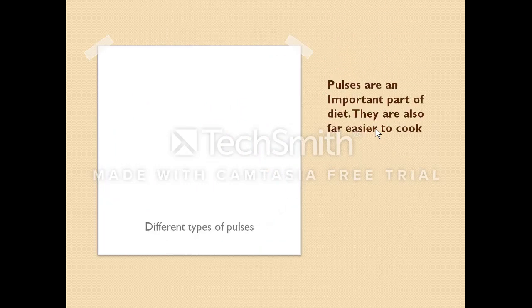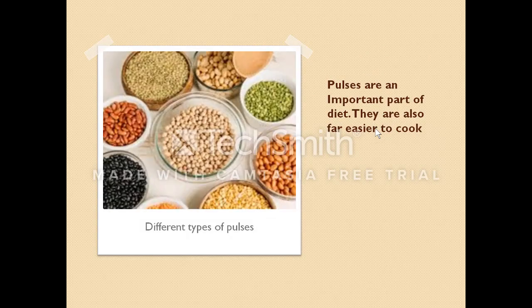Here we have pulses. Pulses are an important part of the diet. They are also far easier to cook — some people prefer pulses over meat because pulses take less time to cook, whereas meat takes more time. Here are the different types of pulses; there are loads and loads of different varieties.